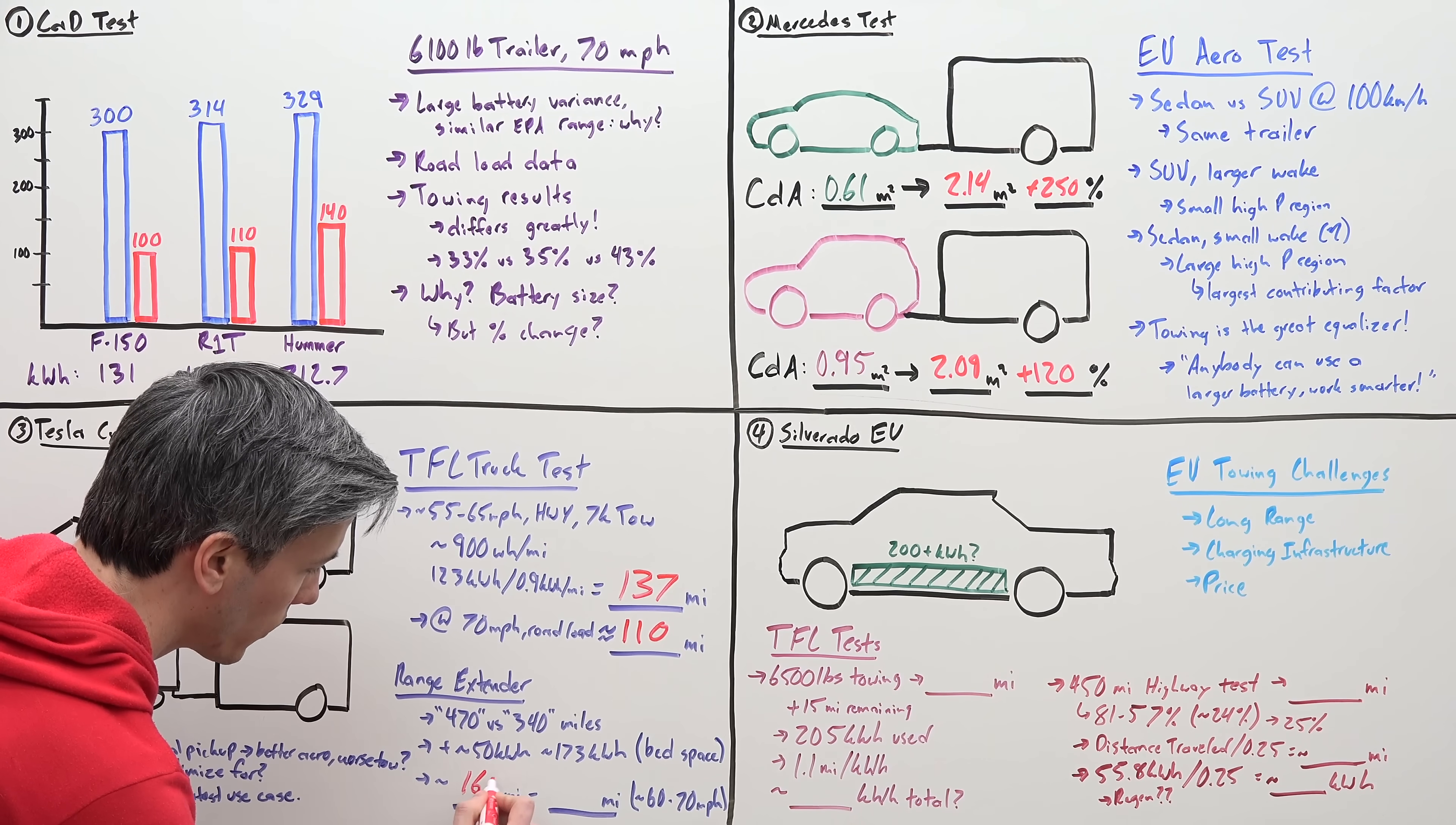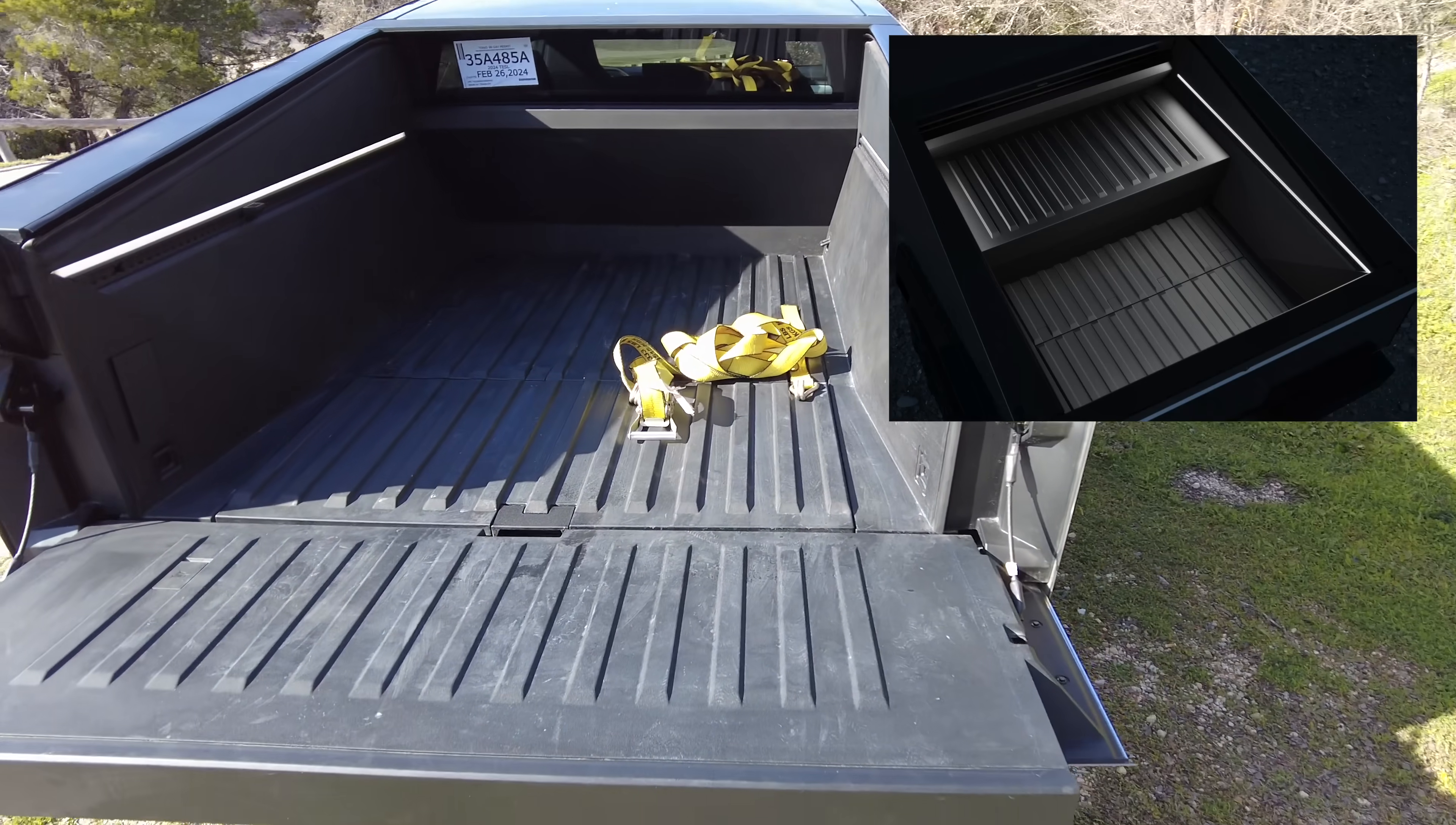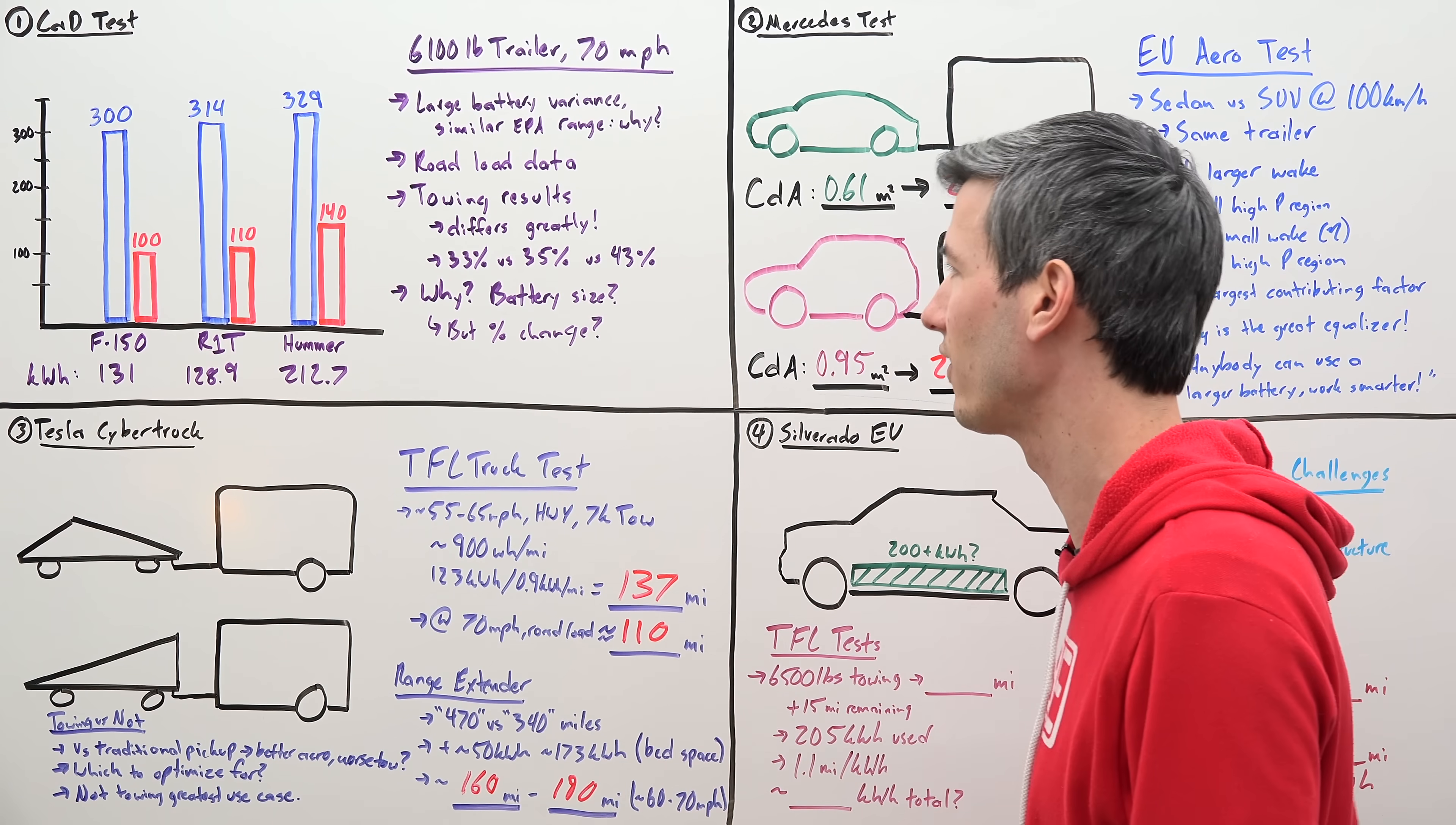In other words, in these range tests, it'd be getting around 160 to 190 miles. Now the downside here is that this range extender is actually taking up some of the bed space. So you're losing a big part of the functionality of your truck. So you're sacrificing bed space and your real world towing still isn't an incredible number. It's certainly better than what we're getting with today's options, but it's still not that great all things considered.